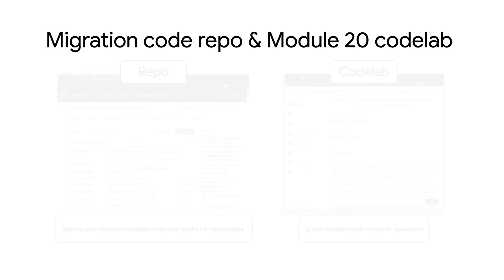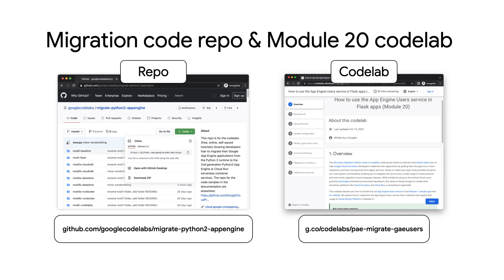I'm a lot less confused now, Wes, about these two different types of admin. I'm ready to add the user service to the module 1 app. Can I do it by hand while you're showing us on screen? Absolutely. Grab your module 1 Python 2 app if you did the codelab, or clone the repo or download the zip file if you didn't. Pause here if you need to do that. Module 1 is where we'll start. You'll find the links below to the repo and module 20 codelab to do this by hand now or on your own time. Let's go to the computer now and do this.